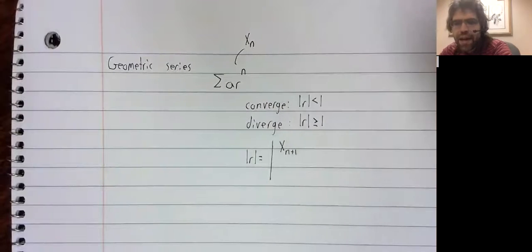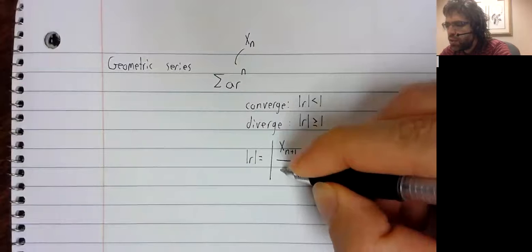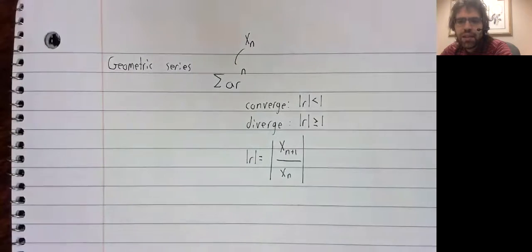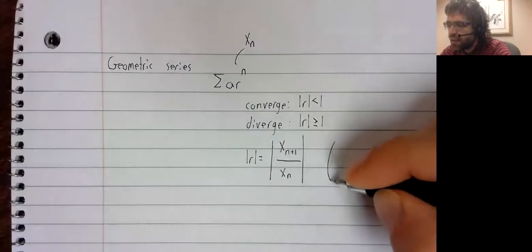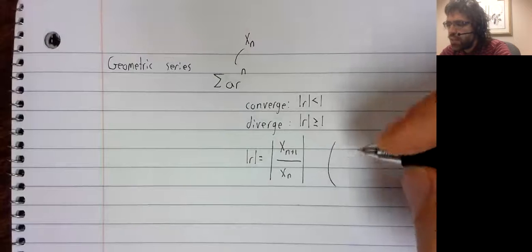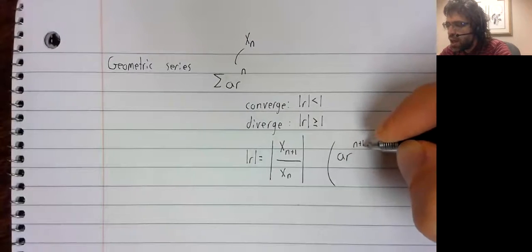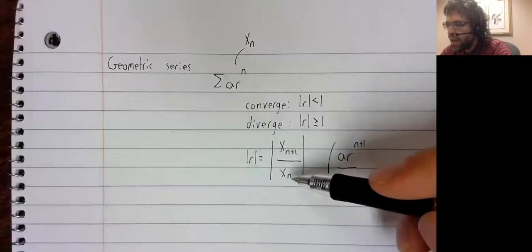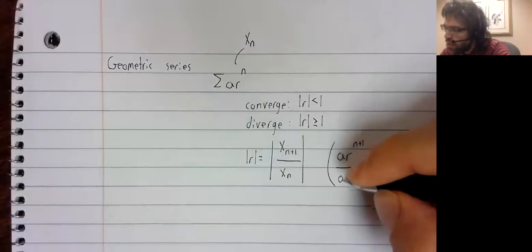is the absolute value of X sub N plus 1 divided by the absolute value of X sub N. X sub N plus 1 is A times R to the N plus 1. X sub N is A times R to the N.